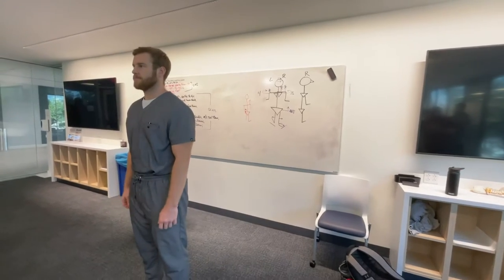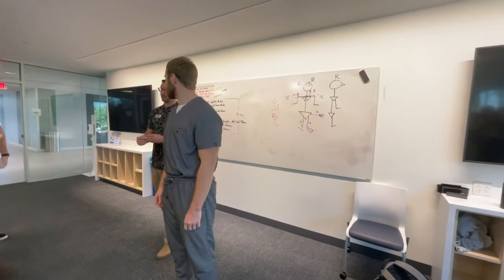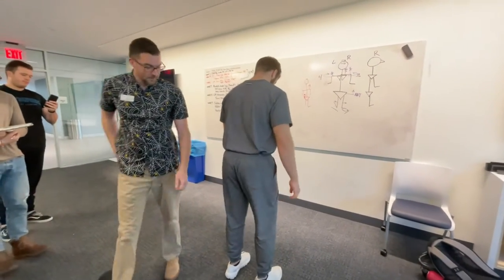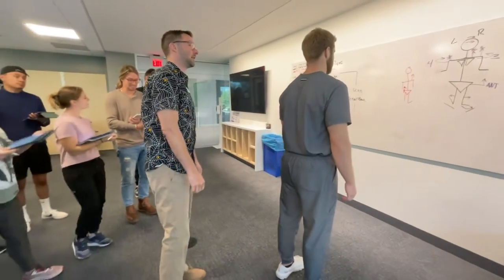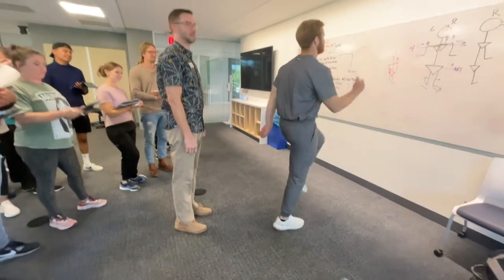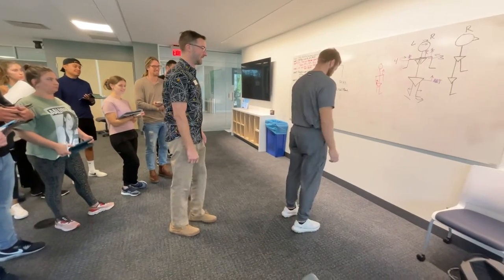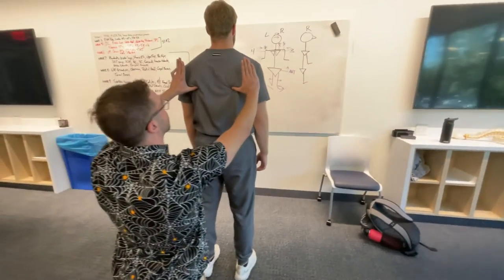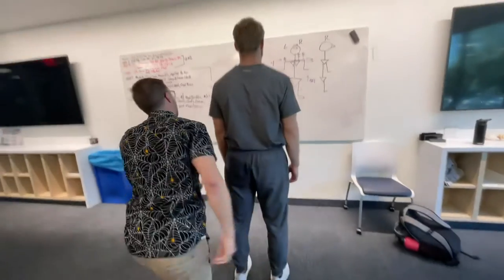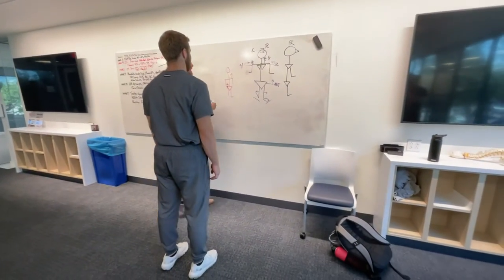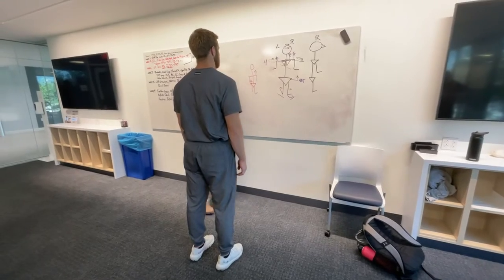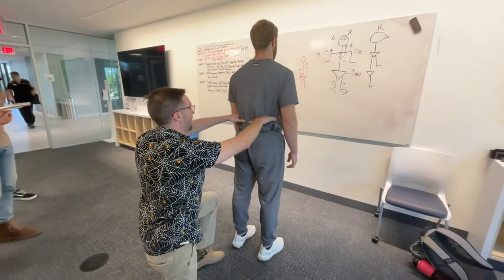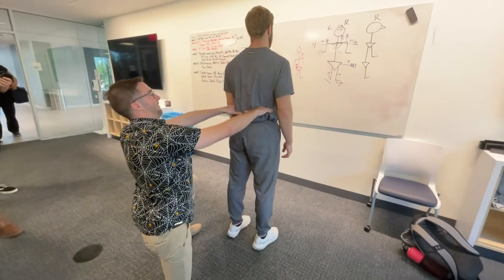We've got a couple more things to do on the posterior side. Normally we'd move around the patient — would you mind facing that way? Make sure everything is the same; go ahead and march in place again. Stop — that's how he walks. Next we're going to look at the inferior angle of the scapula. The left one is high. Last thing: iliac crest — right one's high.